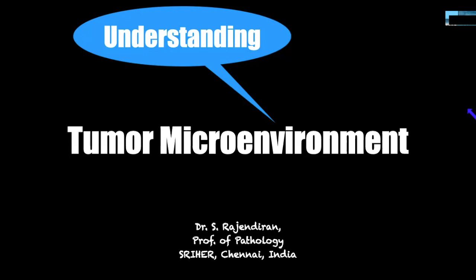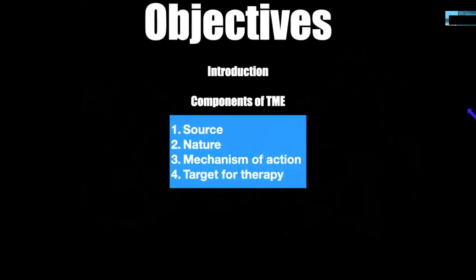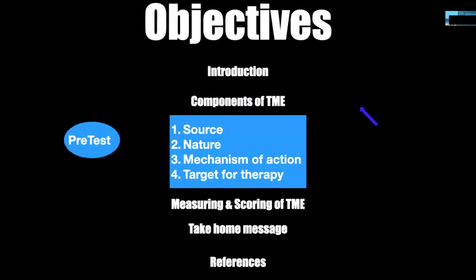We need to know about the tumor microenvironment to explain why some tumors behave badly and why some tumors have a high incidence of metastasis. The objectives of our presentation: introduction to the tumor microenvironment, what are its components, and for each component I want to discuss the source, the nature, and the mechanism of action. Last but not least, is there any target for therapy? There are a lot of measuring and scoring systems for tumor microenvironment — I will touch on those — but the main talk will be more on the components.